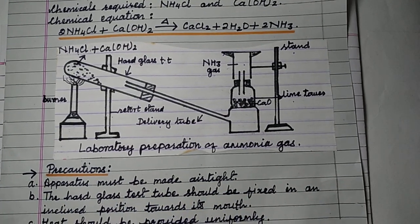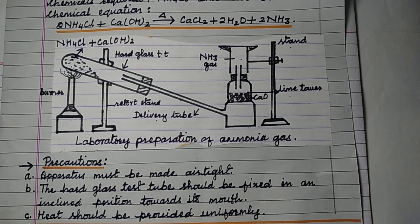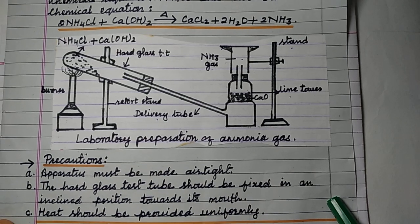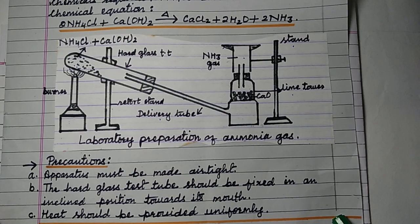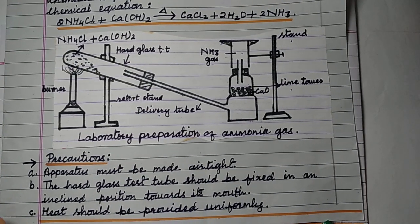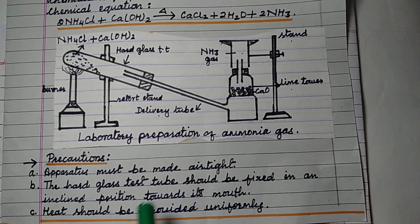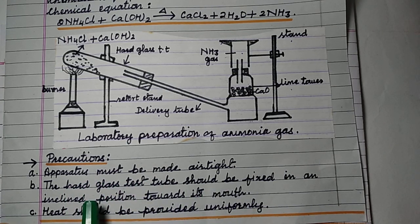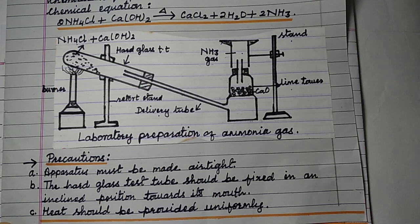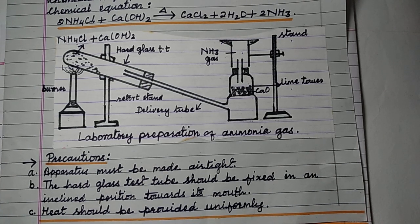Three precautions for the laboratory preparation of ammonia gas: first, the apparatus must be made airtight so that air from outside cannot enter; second, the hard glass test tube should be fixed in an inclined position towards its mouth; third, heat should be provided uniformly.